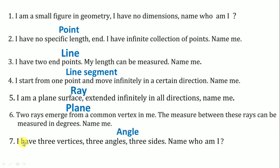And the last one is I have three vertices, three angles, three sides. Name who am I? So the three sided figure is triangle. We write triangle.